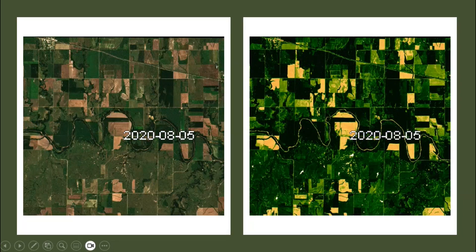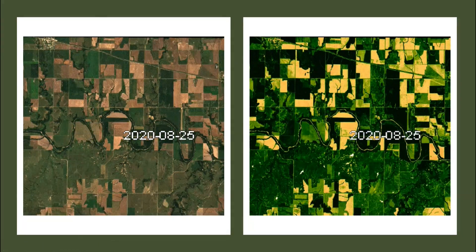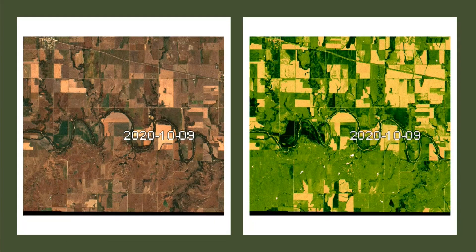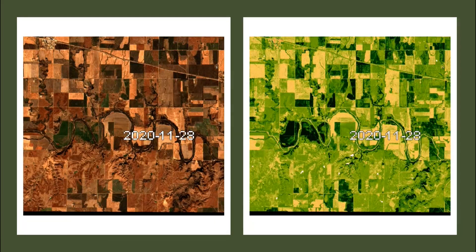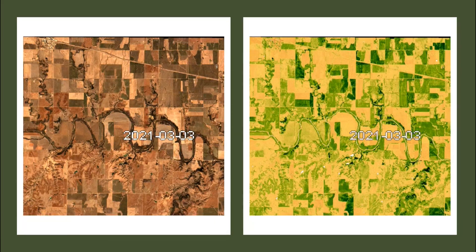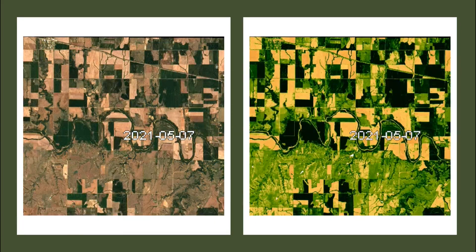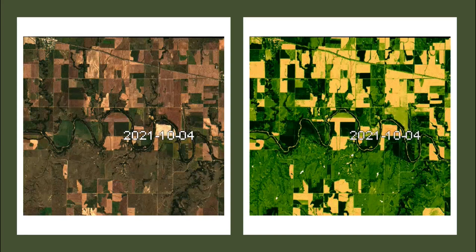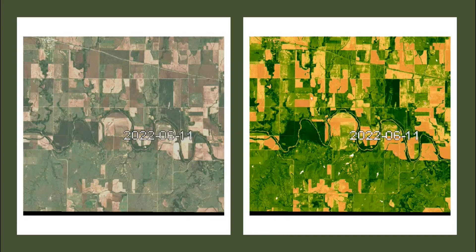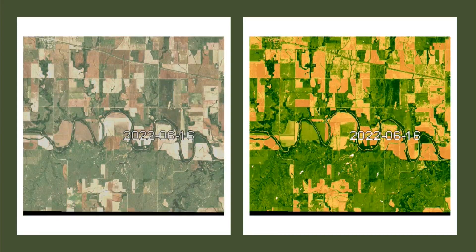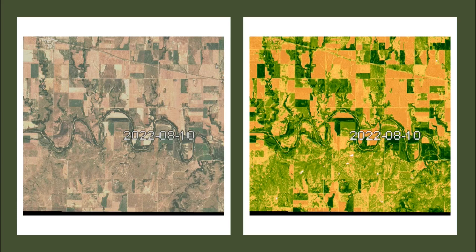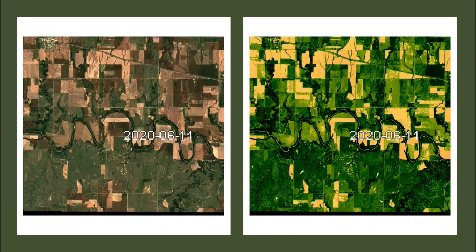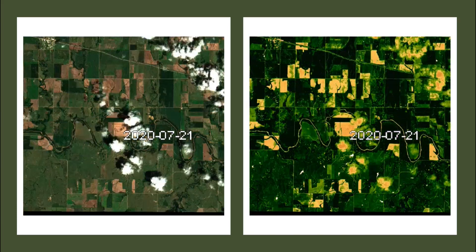Ask any farmer and they will tell you, not all locations in a field are created equal. Because of the variation in soil properties and elevation, farmers get different yields for different zones in the field. This variation is the cornerstone of precision farming, or variable rate applications.